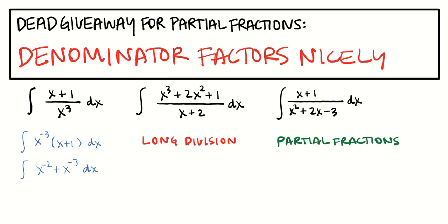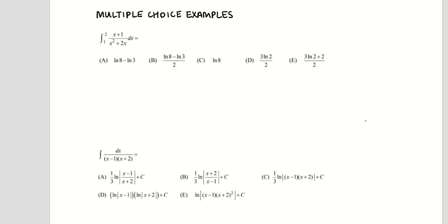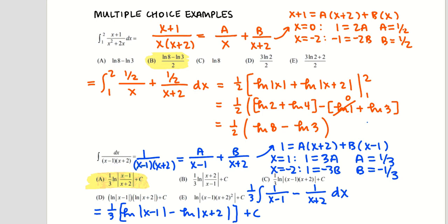I'm going to put up a couple more examples so you can practice. These are two examples of old multiple choice questions where they've applied some log properties — I'm telling you that these days that's not going to happen. That used to be something they emphasized. I've seen recent questions where they'll just leave it as, say, half of log of 2 plus log of 4 minus log of 3 — they would not combine the 2 and the 4. Same for the second one: they'd leave it as 1/3 log of absolute value of x minus 1/3 log of absolute value of x plus 2, and wouldn't combine them into a single fraction.